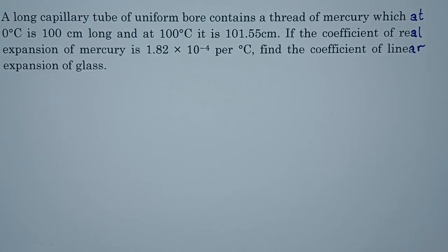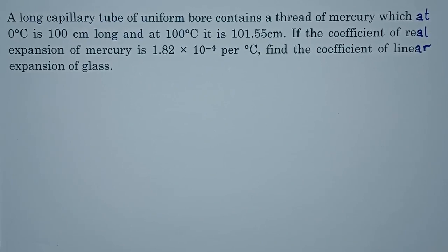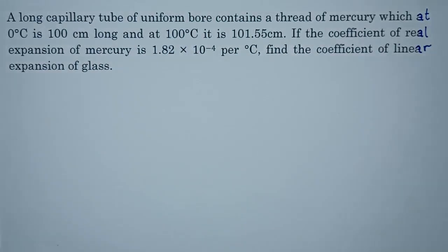Hi guys, so in this video we are going through a problem under temperature and heat. A long capillary tube of uniform bore contains a thread of mercury which at zero degrees Celsius is 100 centimeters and at 100 degrees Celsius is 101.55 centimeters.